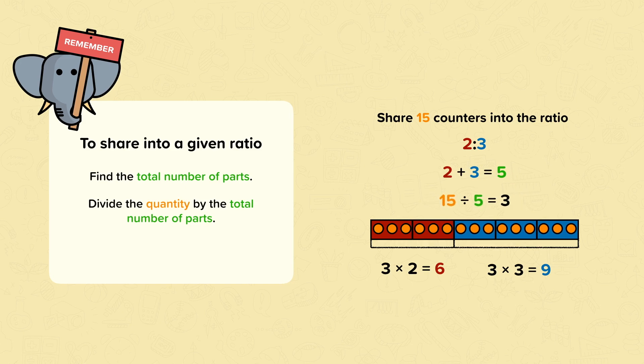Divide the quantity by the total number of parts. Here, that's 15 divided by 5, which equals 3.